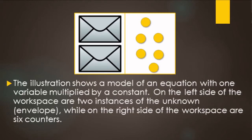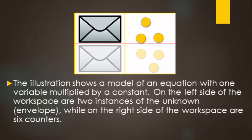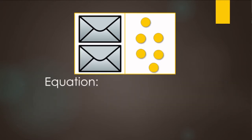Looking at this illustration, we want to figure out how many yellow dots are in each of these envelopes. We have the same amount of yellow dots on both sides. If we pair up these three with one envelope and these three with the other envelope, we're essentially dividing our picture by two. Each envelope holds three yellow dots. If we write an equation for this, we have two envelopes — x is a variable for the unknown contents — and 2x equals 6.